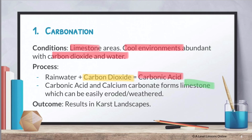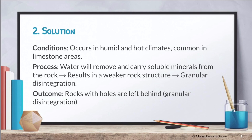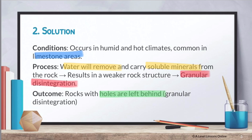Next up, we have solution. Conditions: humid, hot climates, and occurs in limestone areas as well. Solution and carbonation are basically the main agents for your karst landscapes. What happens is that when water removes soluble materials or minerals from the rock, it results in a weaker rock structure because you're altering the chemical composition. This results in granular disintegration, as we learned from the previous video. As a result, there are rocks with holes left behind — this is also a form of weathering. Take note of the term granular disintegration.